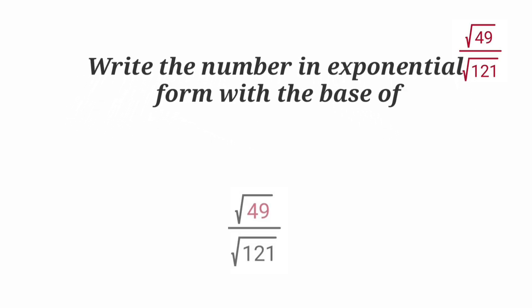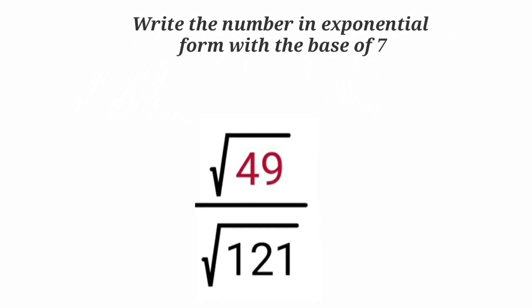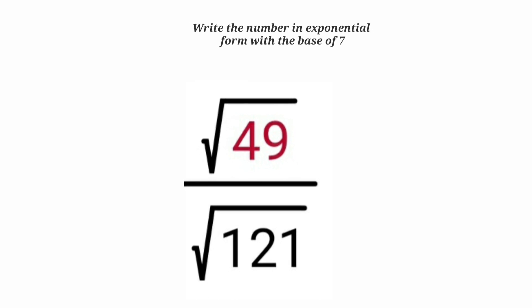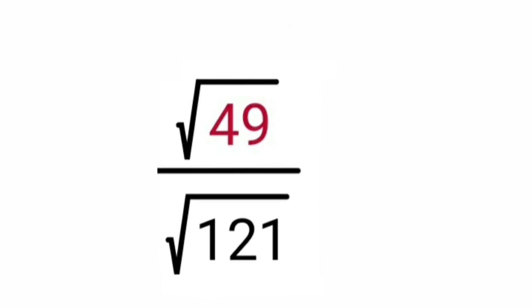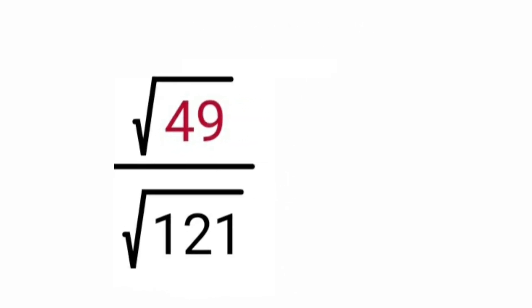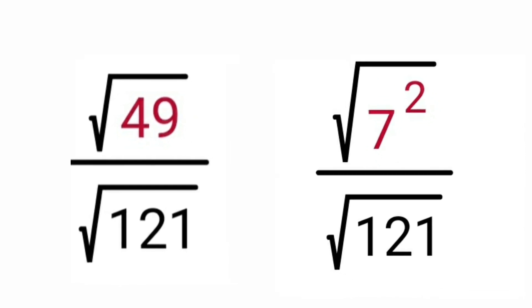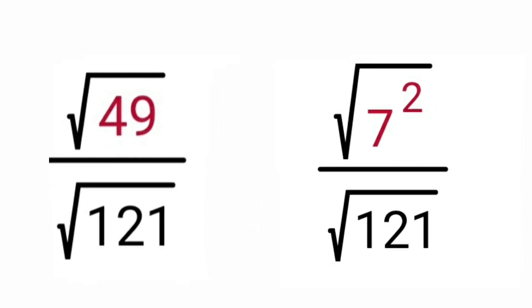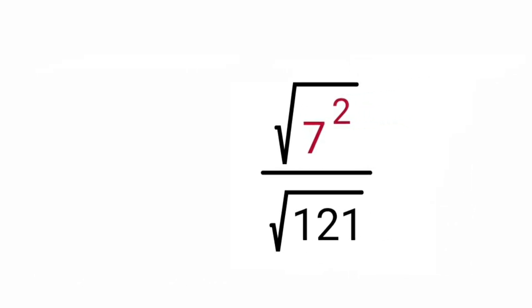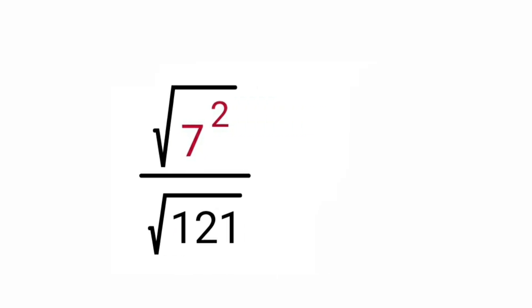Write the number in exponential form with the base of 7. Under root 7 square upon under root 121.